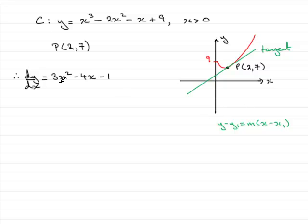So what we need is the gradient at the point when x is 2, at the point P. So just put down here that when x equals 2...